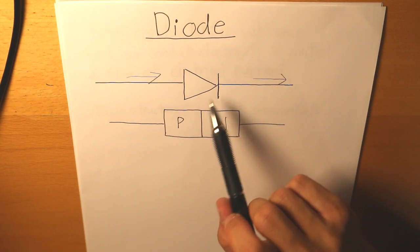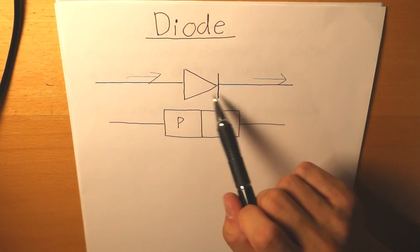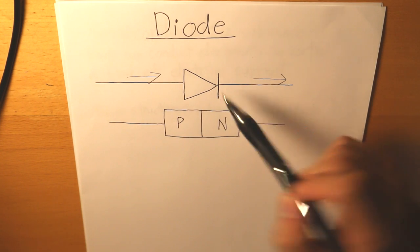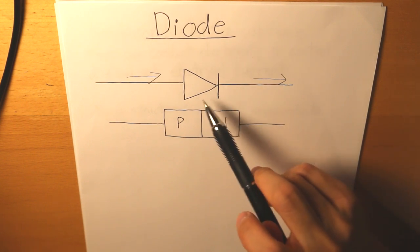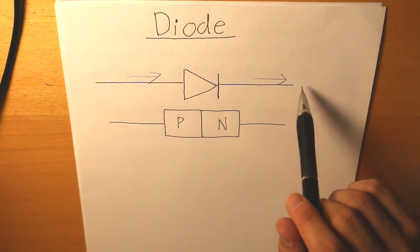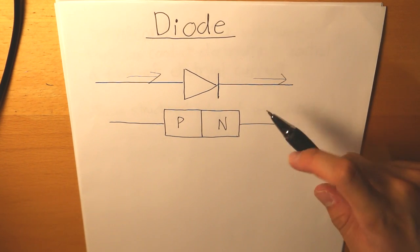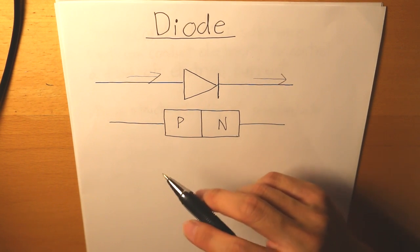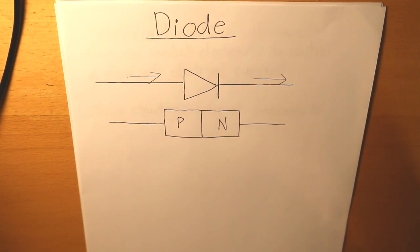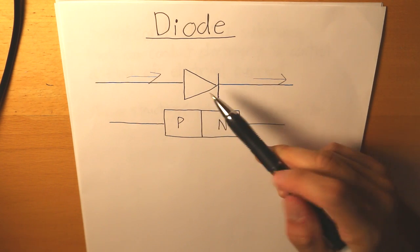Current travels in the direction at which the tip of the triangle is pointing — and the triangle is simply part of the symbol of the diode. In this diagram we have a current that is flowing to the right, so it cannot go to the left. The reason is because of how the diode is structured, so we're going to go a little bit deeper to discuss how this diode is formed.